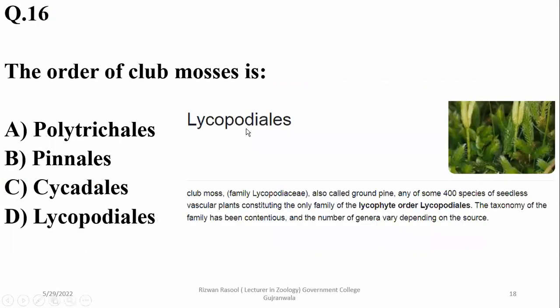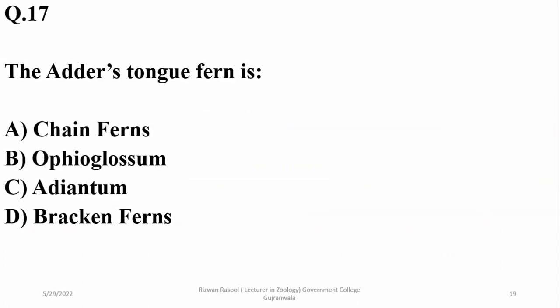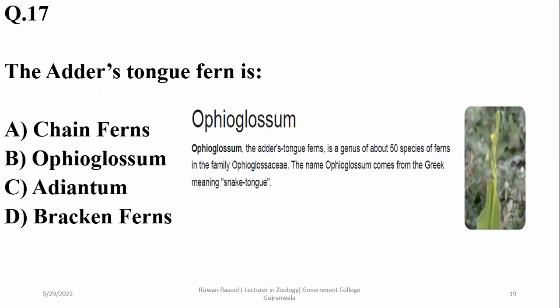Question sixteen: the order of club mosses is Lycopodiales. Question seventeen: the adder's tongue fern is basically Ophioglossum, a genus of about 50 species of ferns in the family Ophioglossaceae. The name relates to its meaning — adder's tongue or snake tongue.